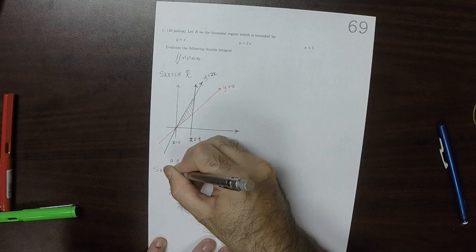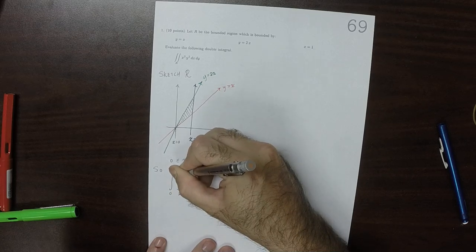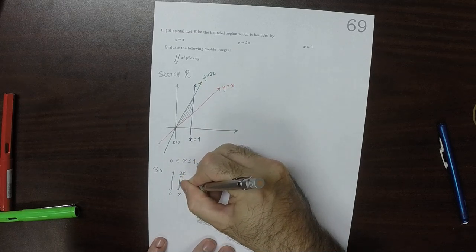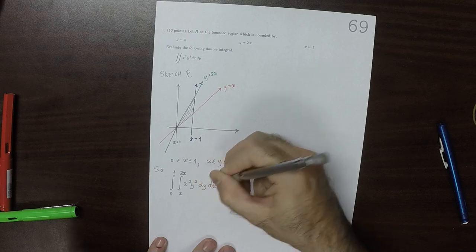So that would be integral from 0 to 1, integral from X to 2X, X squared Y squared, dY dX.